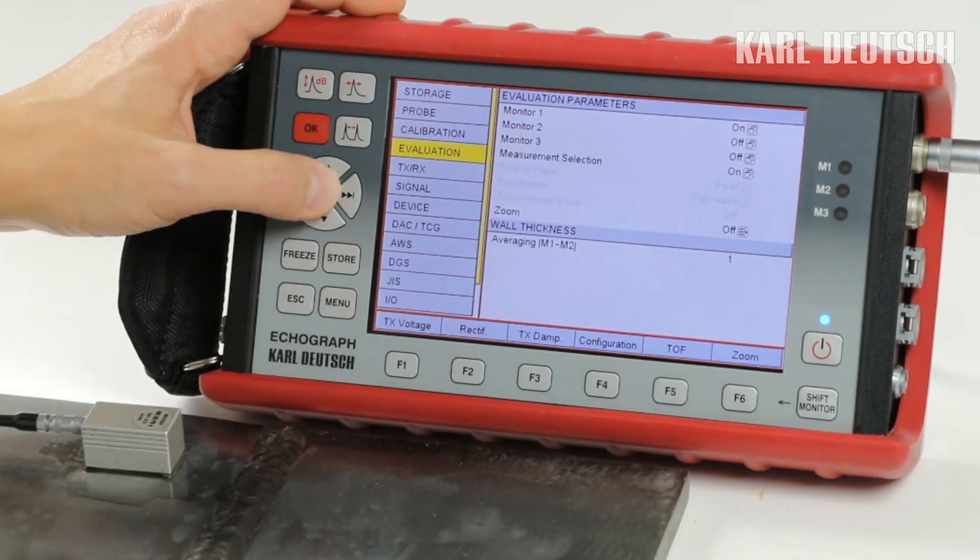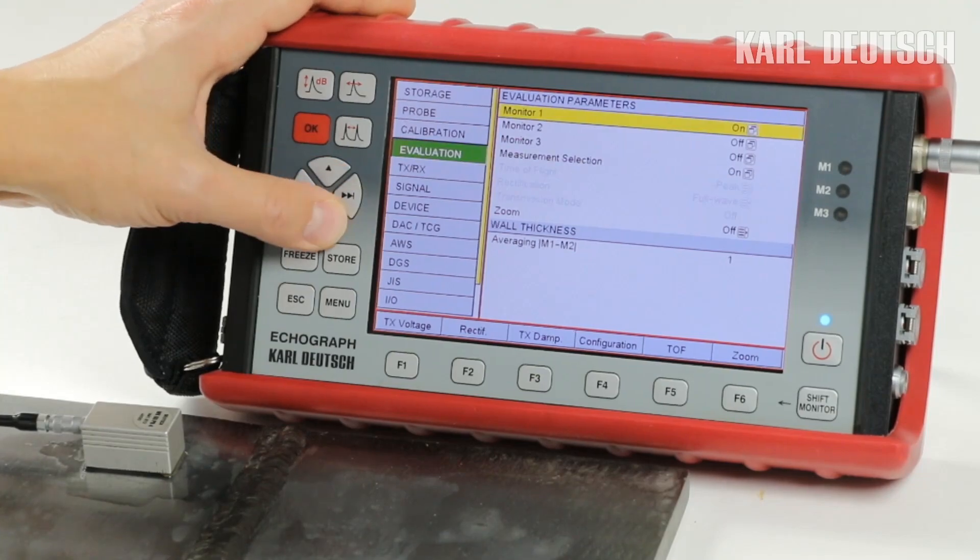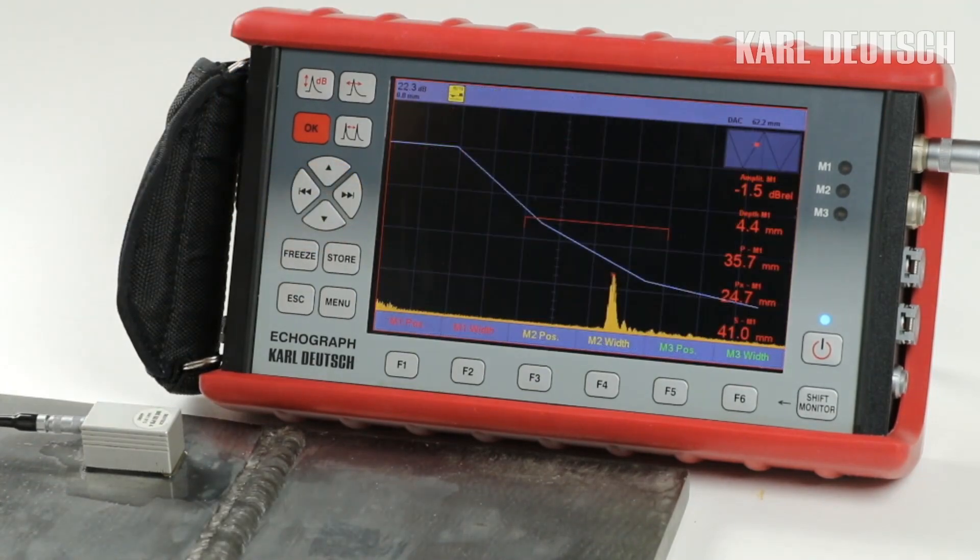Further relevant measured values can also be set in the gate menu in the measured value selection. In total, up to six measured values can be displayed or five plus the skip information.